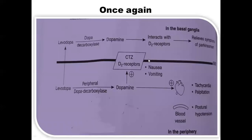To summarize: levodopa is converted by dopa decarboxylase to dopamine in the periphery, acting on the heart, blood vessels, and CTZ receptors causing nausea and vomiting. Only 1–2% crosses the blood-brain barrier, where it is taken up by dopaminergic neurons, converted to dopamine by decarboxylase, interacts with D2 receptors, and relieves the symptoms of Parkinsonism.